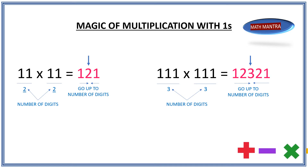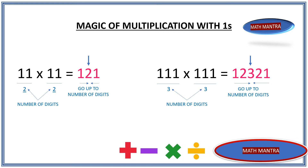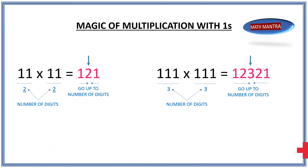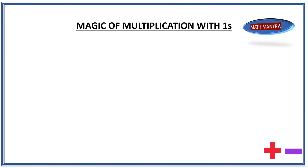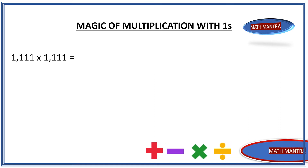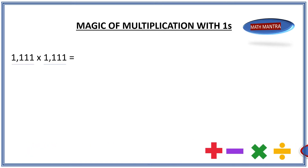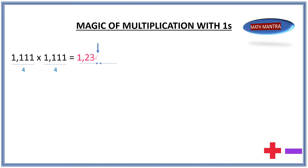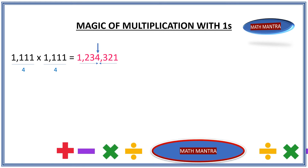We apply the same pattern: start from 1, go all the way to the number of digits, and come back down to 1. Let's apply this to a larger number: 1111 times 1111. The number of digits is 4, so we go all the way up to 4 and come back down: 1, 2, 3, 4, 3, 2, 1 — which is 1,234,321. Easy, isn't it?